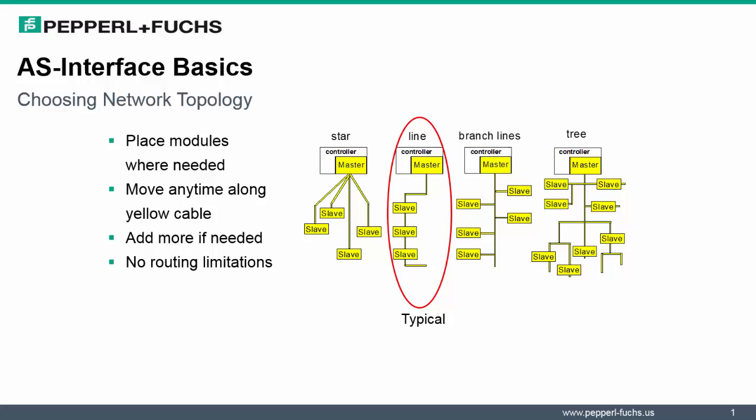AS Interface accepts any network topology, so you can connect your modules in a variety of combinations. The topology of AS Interface is completely open, enabling the user to install the system in a layout that best fits their application.